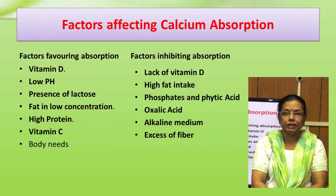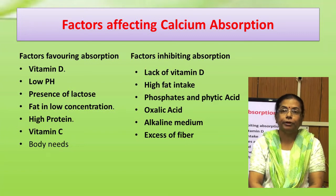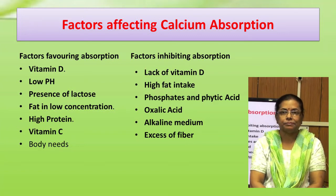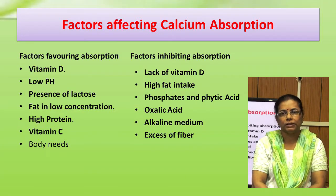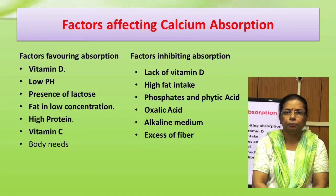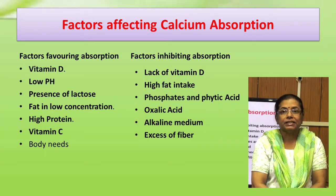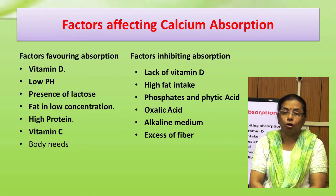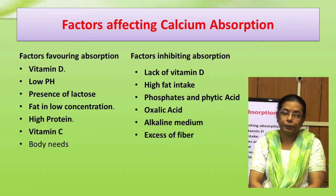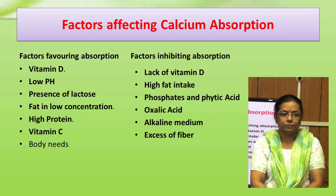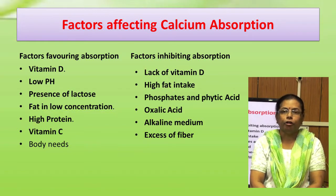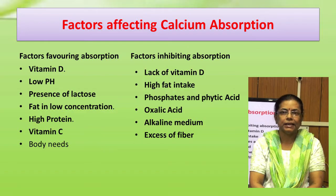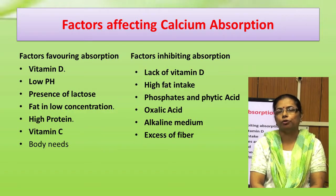There are many factors which increase or decrease calcium absorption. Factors which favor absorption include low pH, presence of lactose, fat in low concentration, high protein, vitamin C, and body needs. Efficient utilization of calcium occurs during rapid growth periods. Factors which inhibit calcium absorption include lack of vitamin D, high fat intake, phosphates and phytic acid, oxalic acid, alkaline medium, and excess fiber.